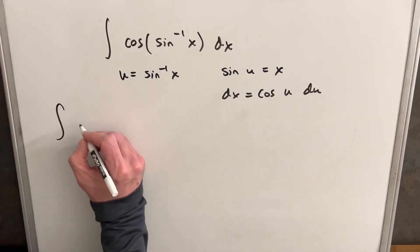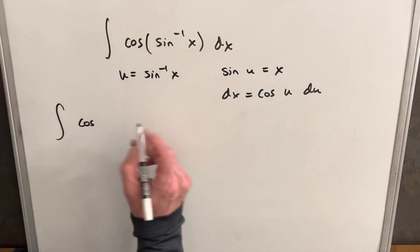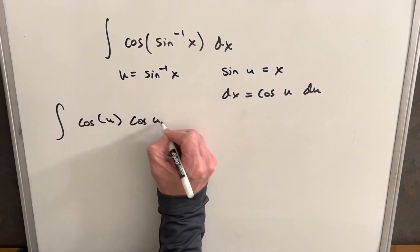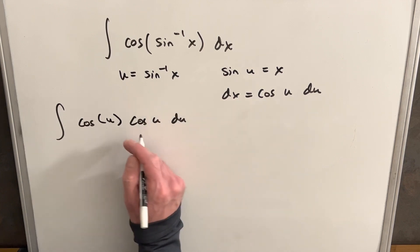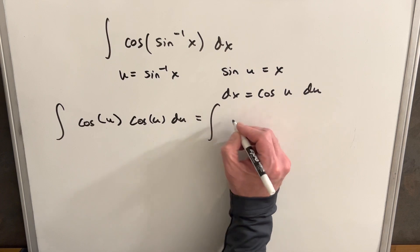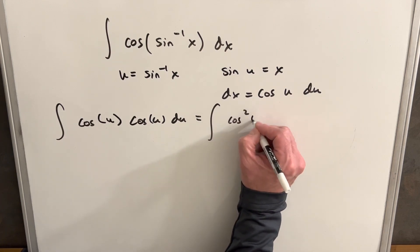Then we can just make this substitution. So we're going to have cosine, this inner part is going to be u, and then we just have our dx which is going to be cos u du. But we got cosine times cosine here, so we're just going to write that as cosine squared u.